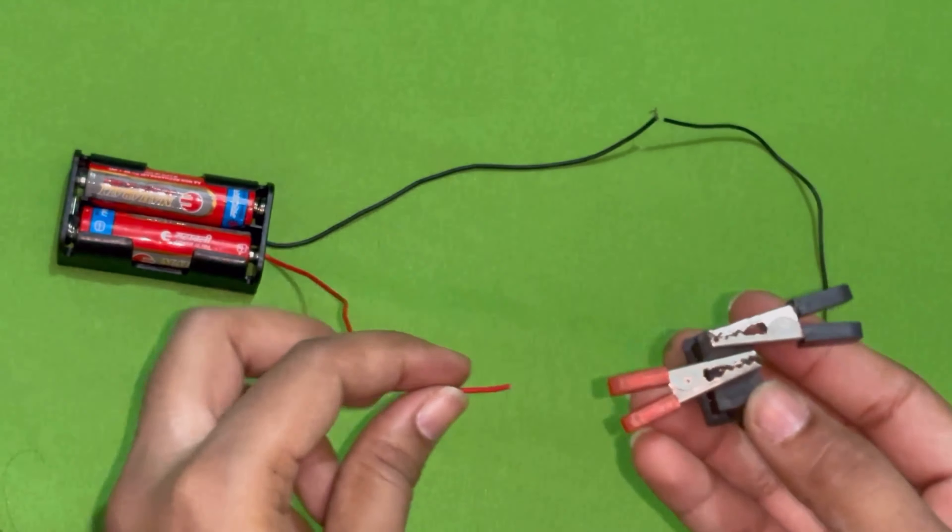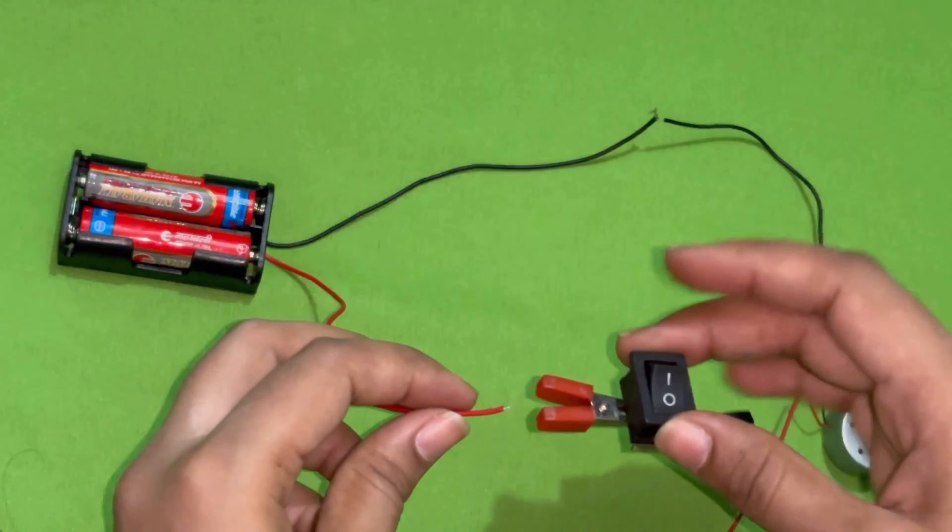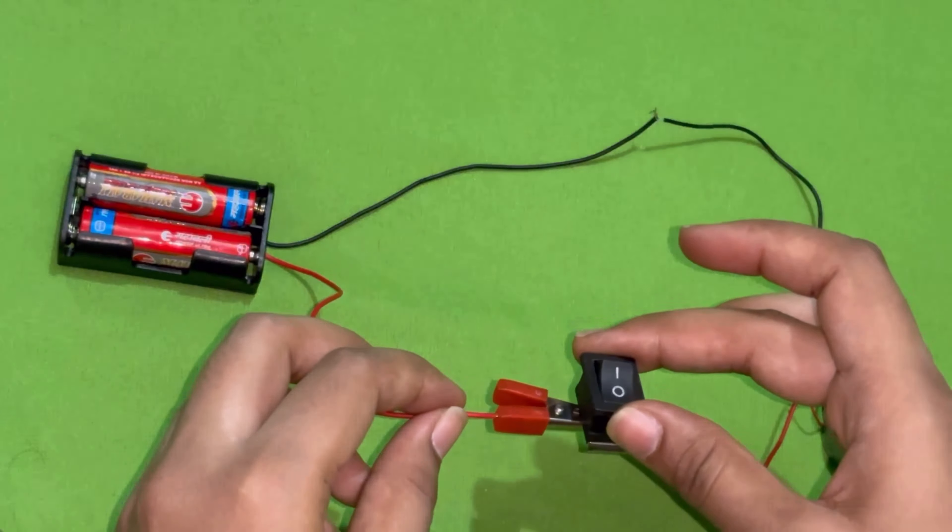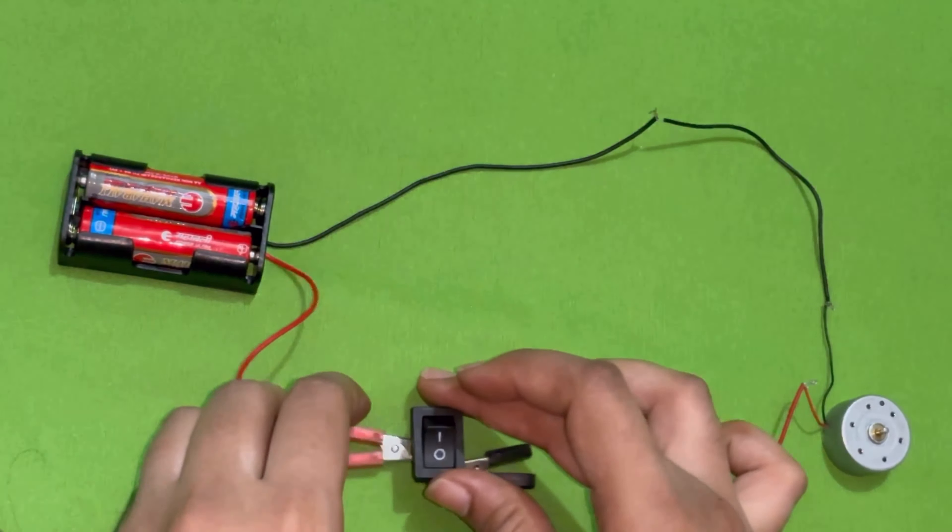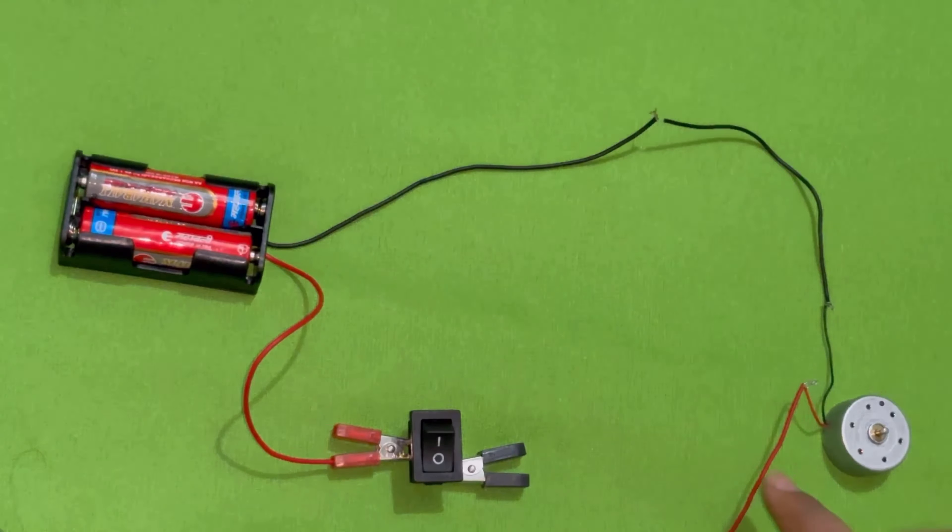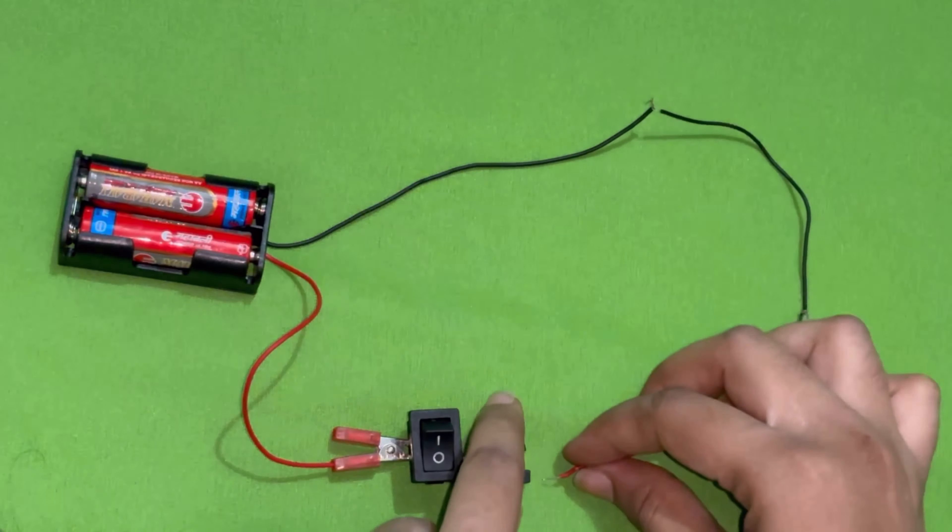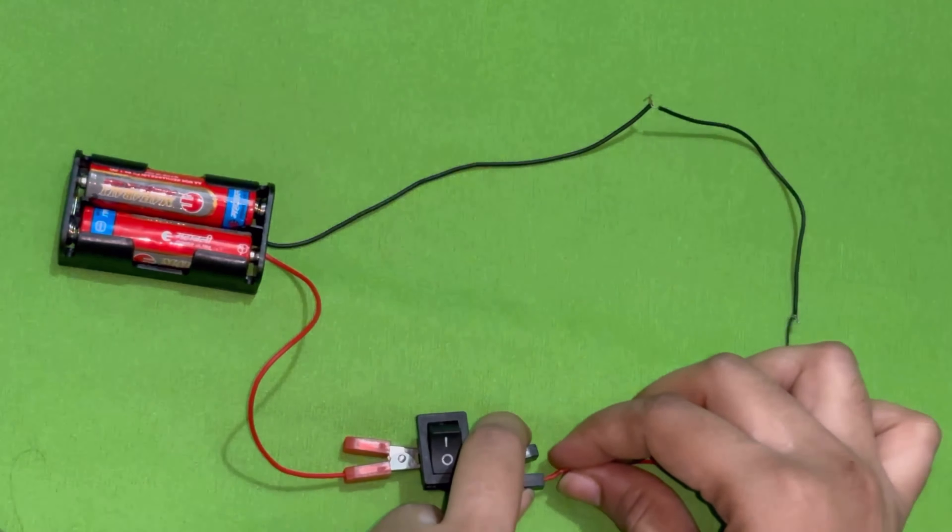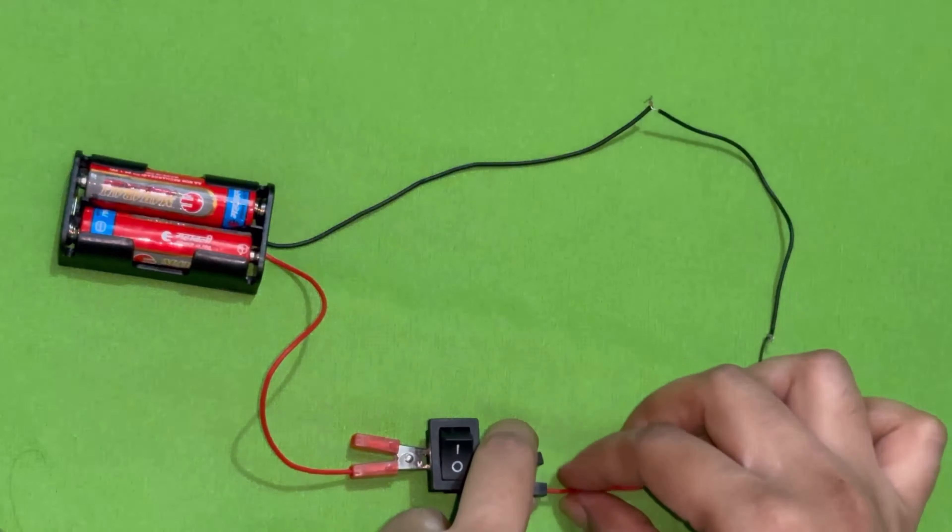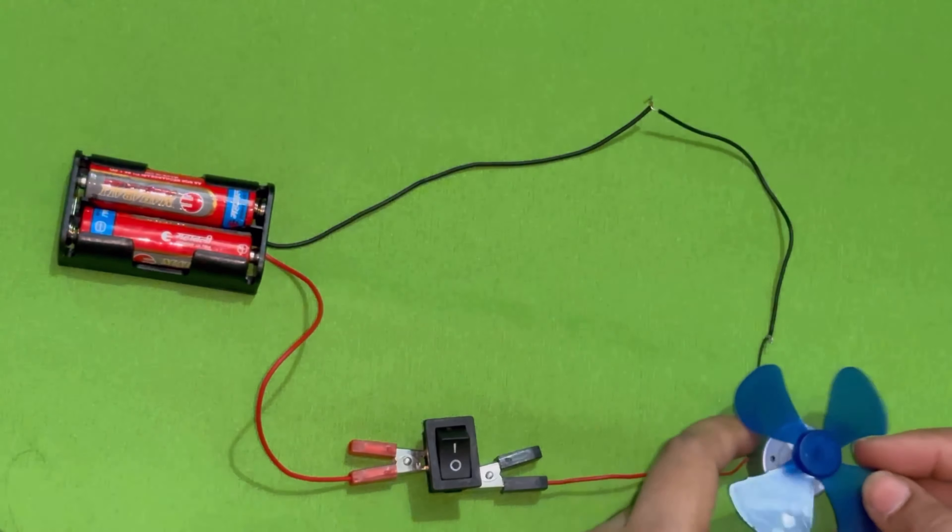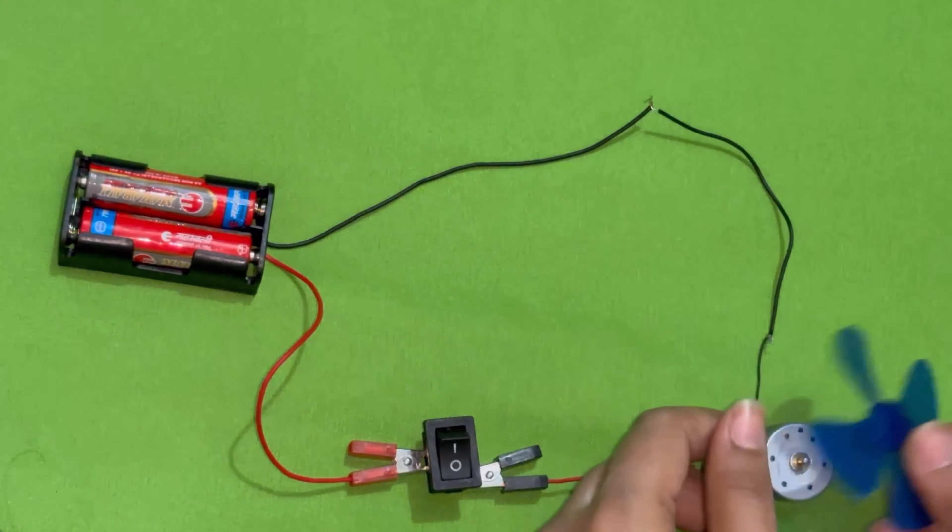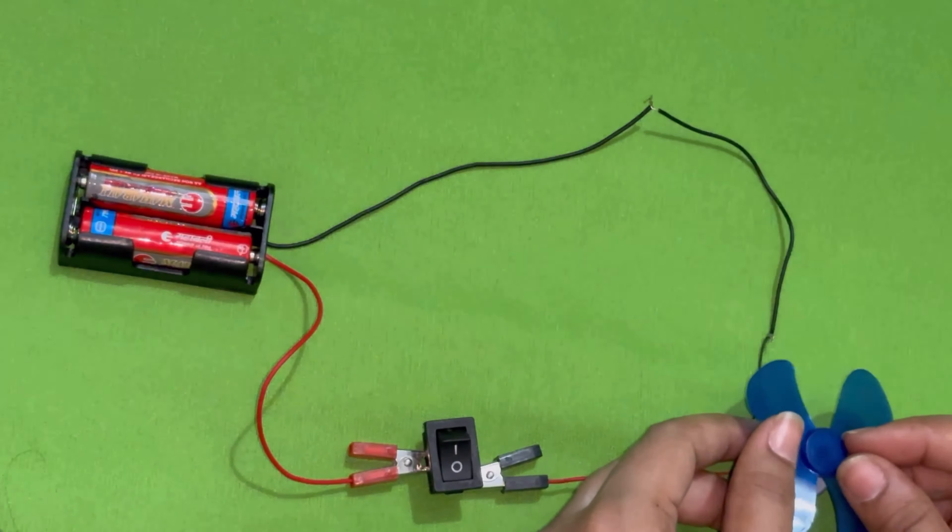Here we will put the red color pin clip. Good. Wire connection is important. Since we are running our fan, we need to connect the fan with the switch now. What will we do with DC motor? We will take a mini fan and fit it to the DC motor. Fit it good, okay.